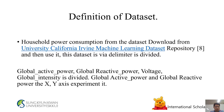Definition of dataset: Household power consumption from the dataset downloaded from the University of California UCI machine learning dataset repository. This dataset via delimiter is divided into global active power, global reactive power, voltage, and global intensity. Global active power and global reactive power are used on the x-y axis for experimentation.